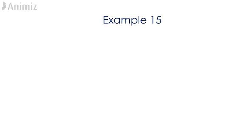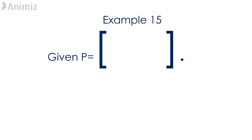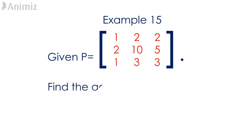Example 15. Given P is a matrix containing the elements 1, 2, 2, 2, 10, 5, 1, 3, 3. Find the adjoint of P.